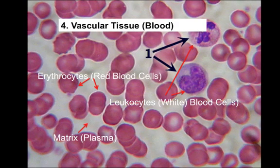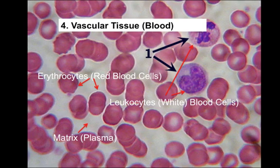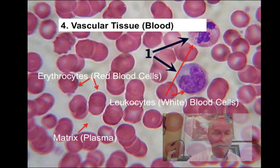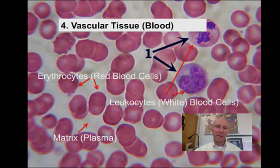Finally we get to vascular tissue, otherwise known as blood. Blood has two basic types of cells: erythrocytes are red blood cells and leukocytes are white blood cells. The matrix is plasma. You find blood in your circulatory system where it's moving all the time. Vascular tissue is considered a connective tissue because its cells develop from mesenchyme, and its primary function is to help transport and support other tissues of the body. And that's it for part two of your introduction to histology and connective tissue — if you have any questions, write them down and bring them to class.